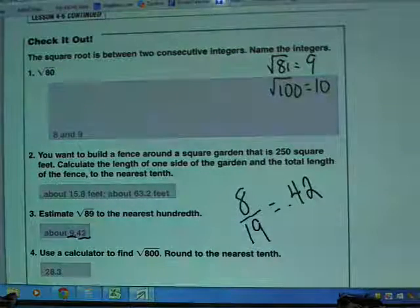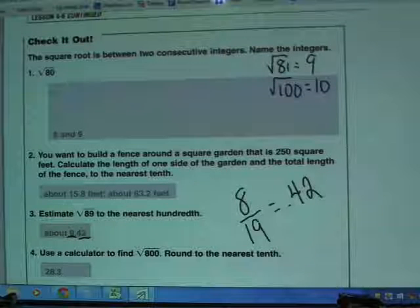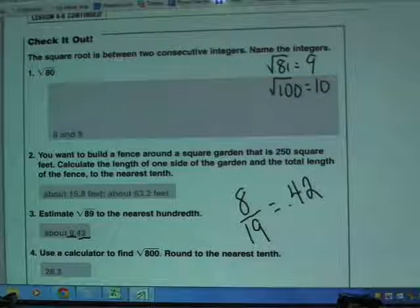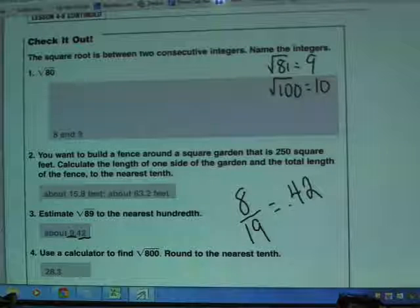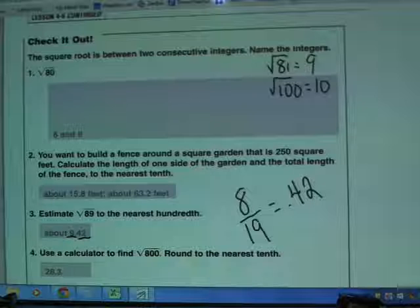And the last one here, they're asking me to use the calculator to find the square root of 800. Square root of 800 on a calculator—again, you can use the square root key or you can use the exponent key and use the 0.5 power—and that's going to be